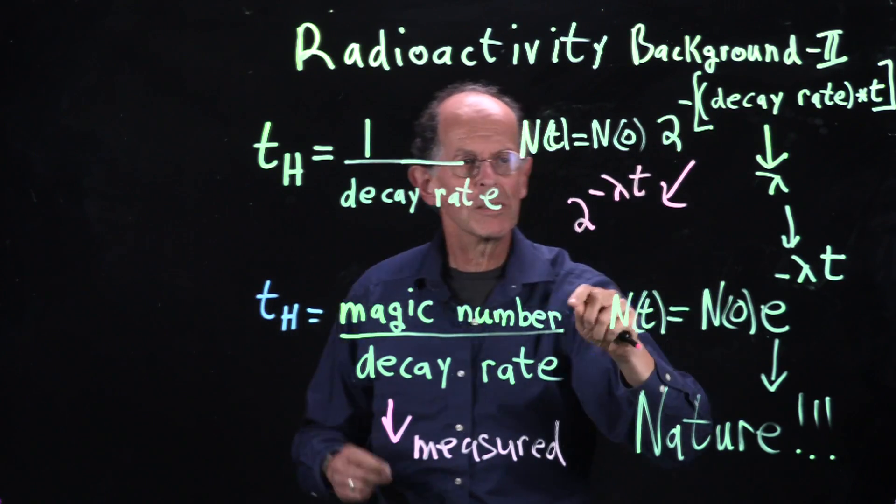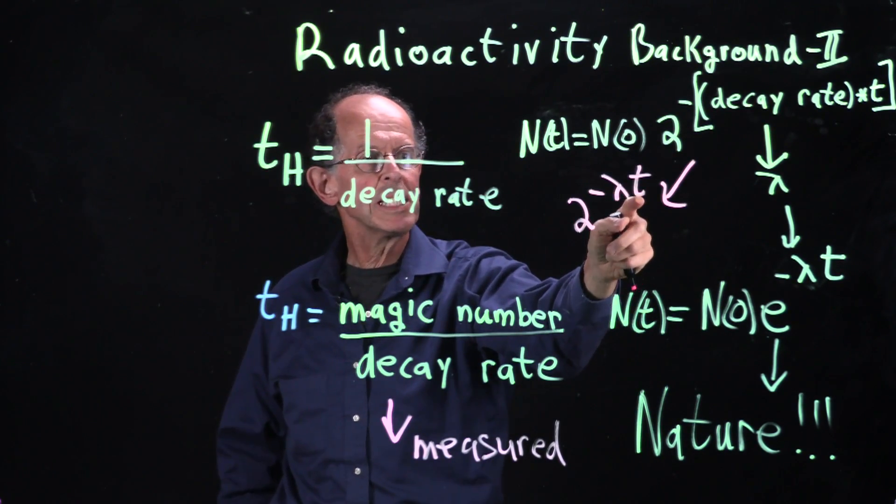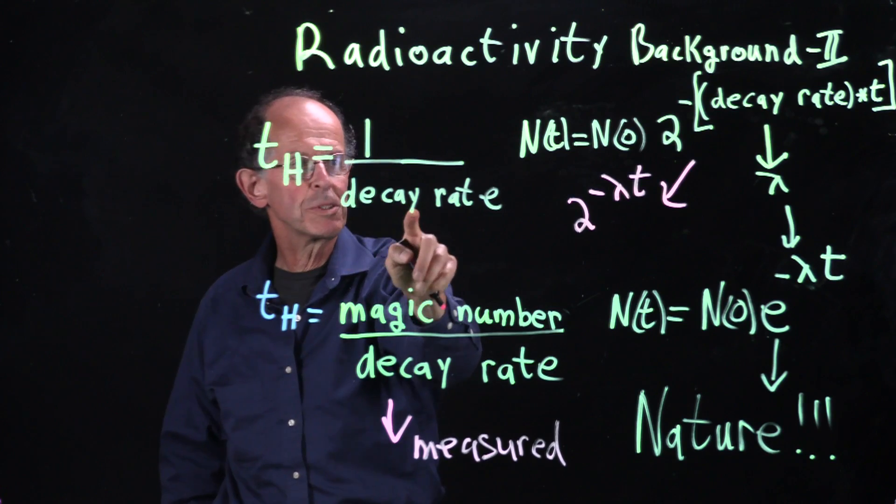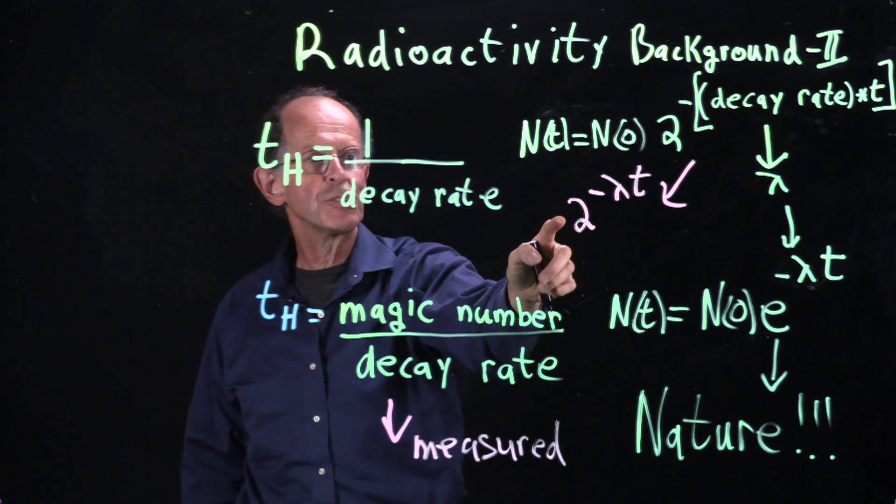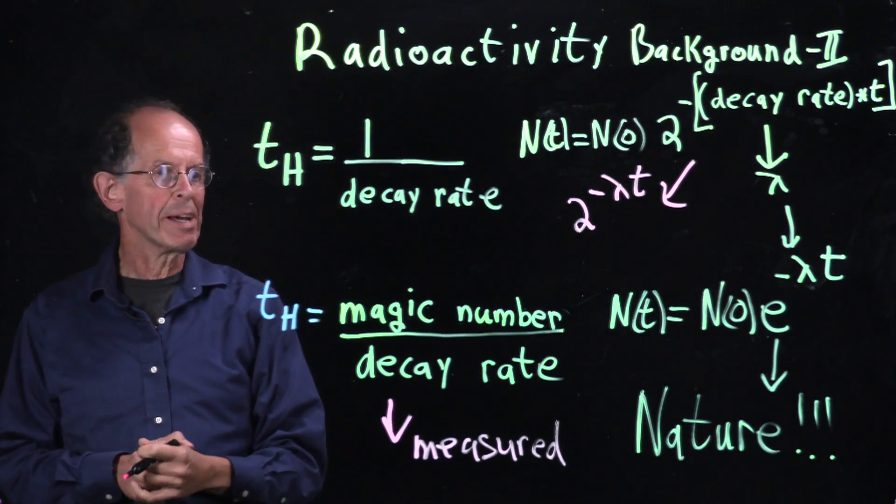That's what this whole thing looks like. Recall that when t is 1 over lambda, 1 over the decay rate, the magic 2 to the minus 1, we get half left.